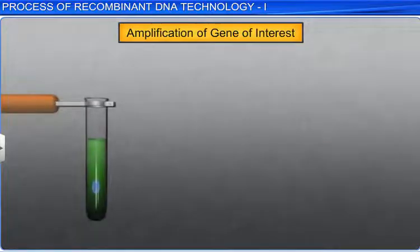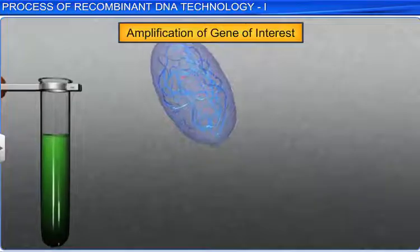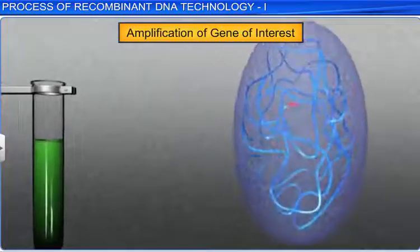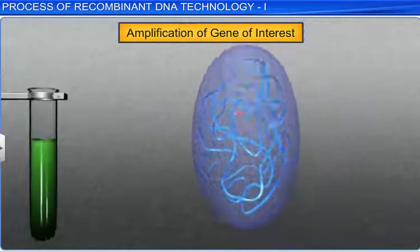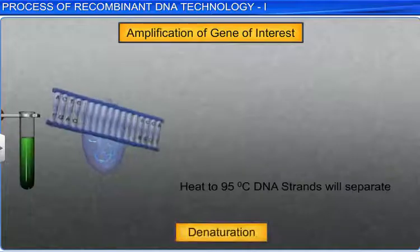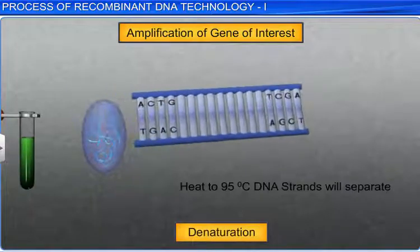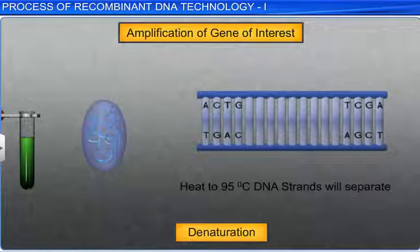In the first step, the isolated or extracted target DNA segment to be amplified is heated to 95 degrees centigrade for denaturation. This leads to the separation of two single strands.